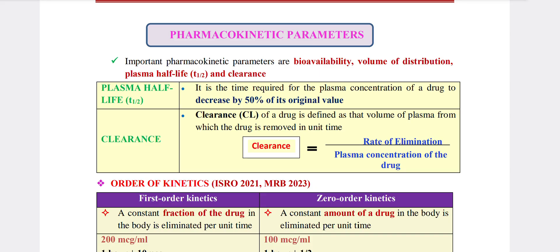If you have 100% bioavailability with IV, the drug is distributed. When distributed, protein binding occurs. Acidic drugs bind to albumin; basic drugs bind to plasma proteins. That is also binding.